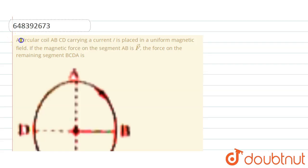Now, today's question is: a circular coil ABCD carrying a current I is placed in a uniform magnetic field. If the magnetic force on segment AB is F vector, what is the force on the remaining segment BCDA?